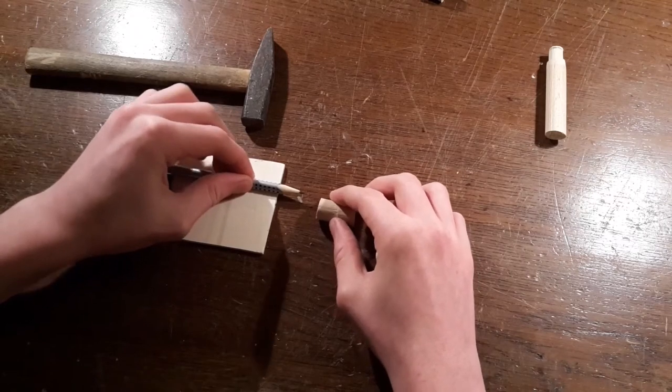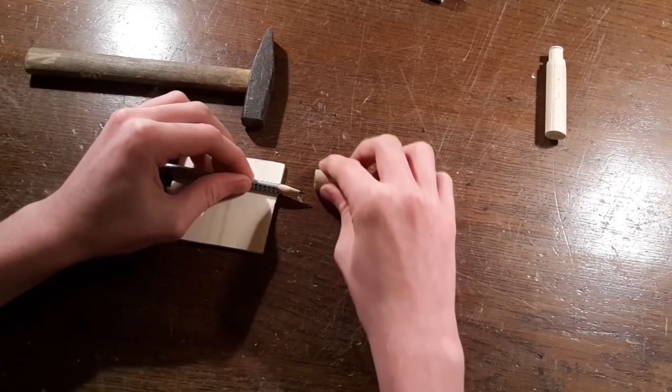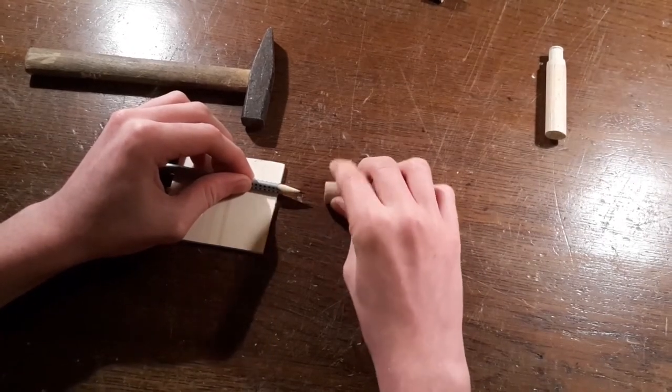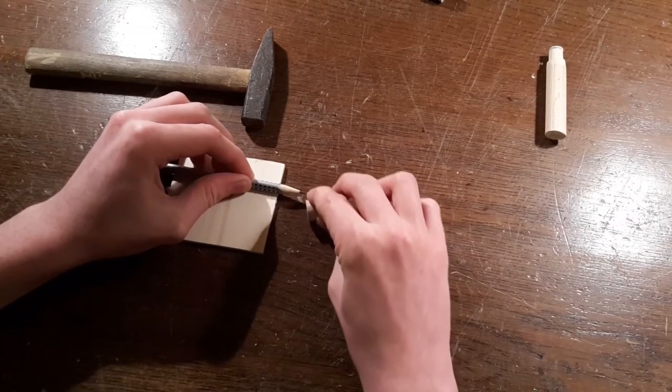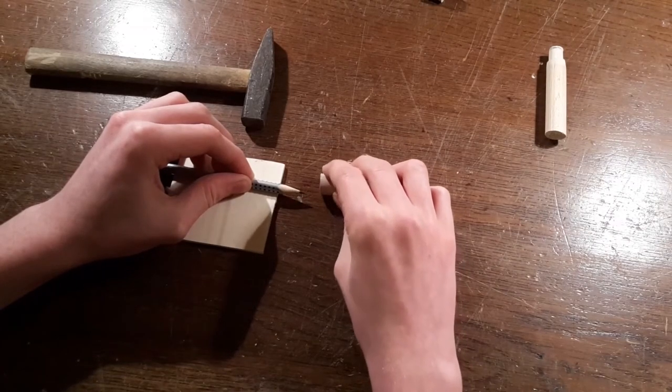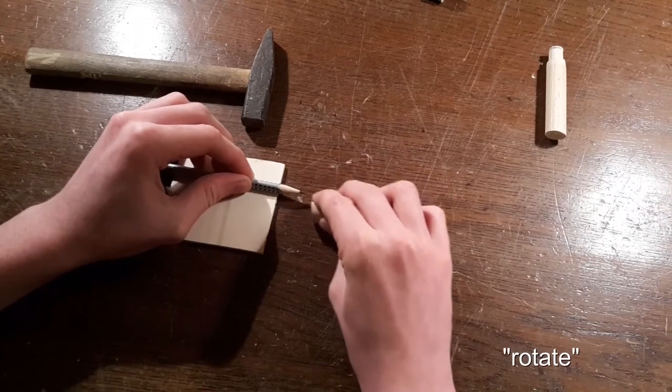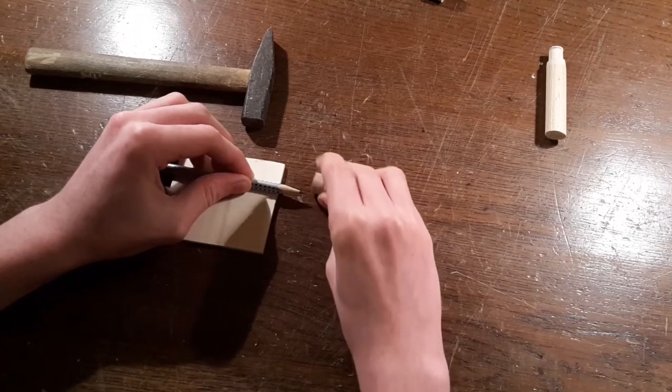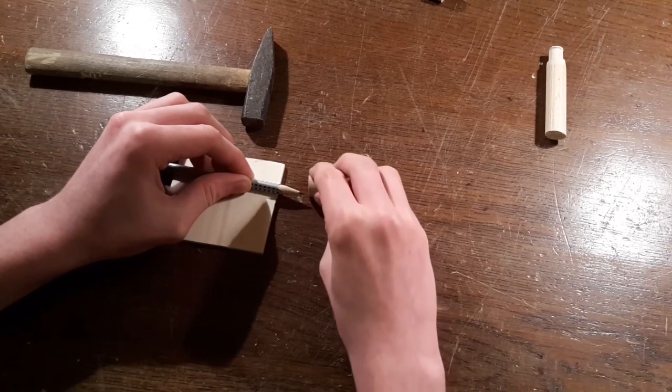Hold it down so it doesn't move, and then just run the piece of dowel over the tip of the pencil. Rotate it just a little bit after every pass.